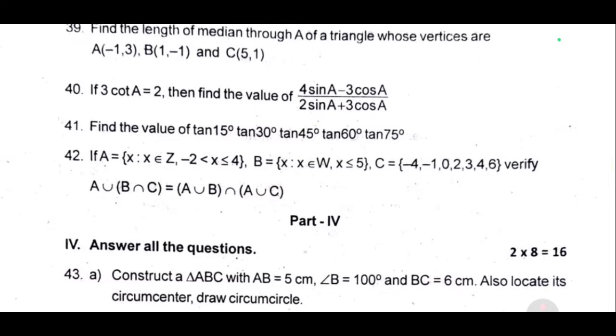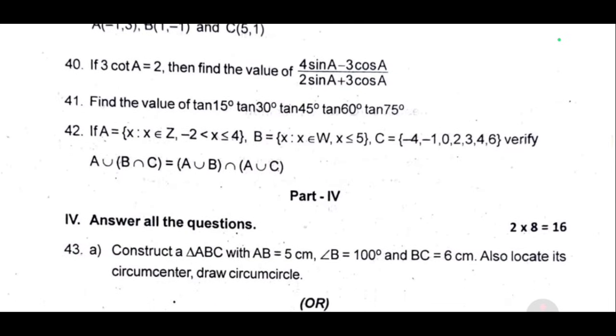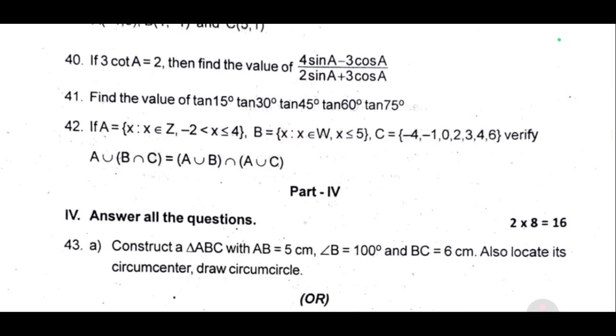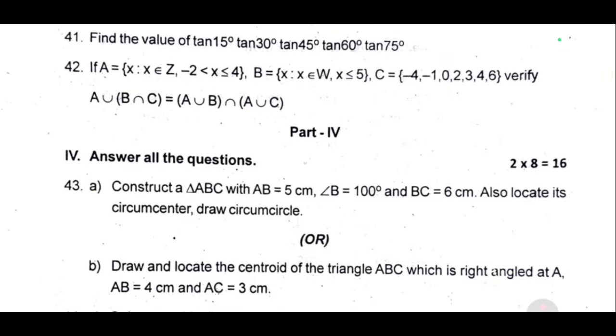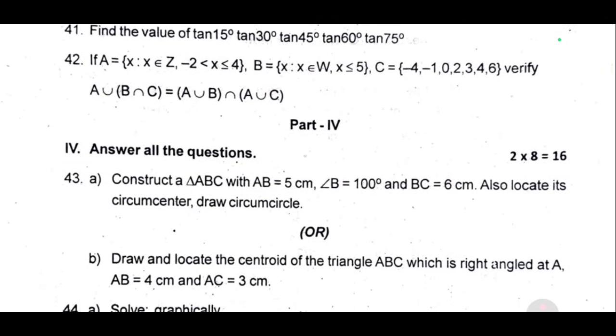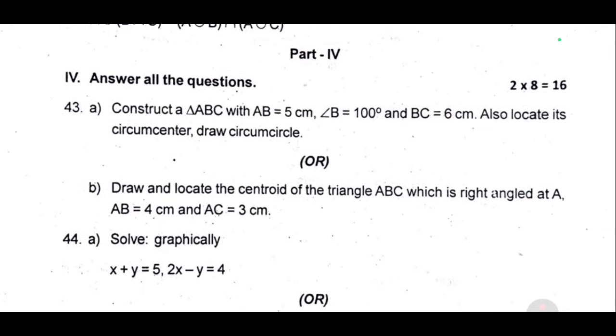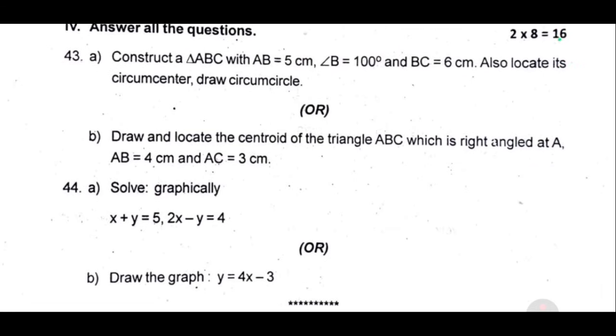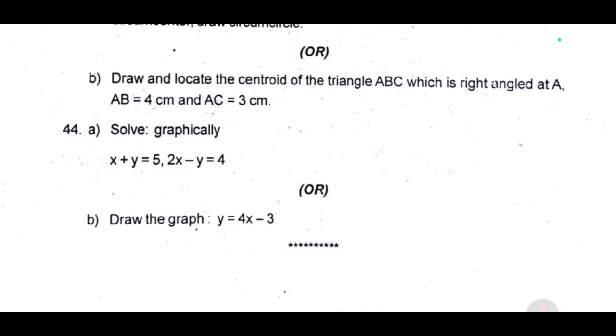Part 4, 8 marks. 43, construct triangle ABC with AB equal to 5 cm, angle B equal to 100 degrees, BC equal to 6 cm. Locate circumcenter and draw circumcircle. Or, draw and locate the centroid of the triangle ABC which is right angle at A, AB equal to 4 cm and AC equal to 3 cm. 44, solve graphically x plus y equal to 5, 2x minus y equal to 4. Or, draw the graph y equal to 4x minus 3.